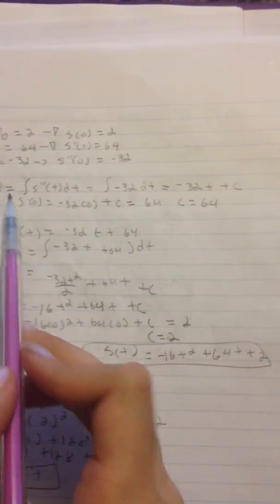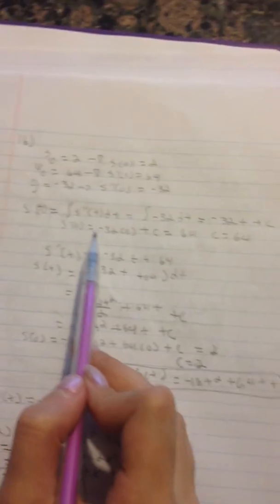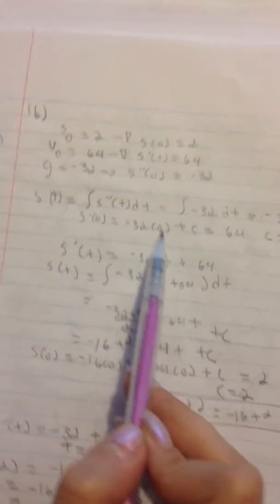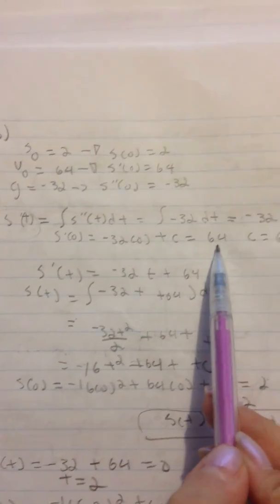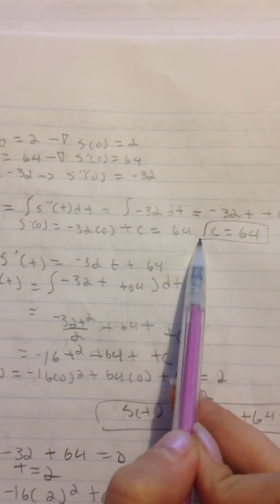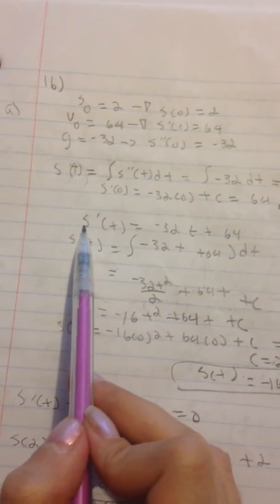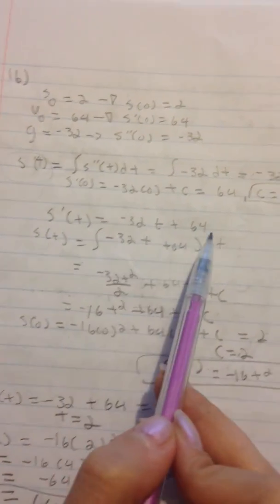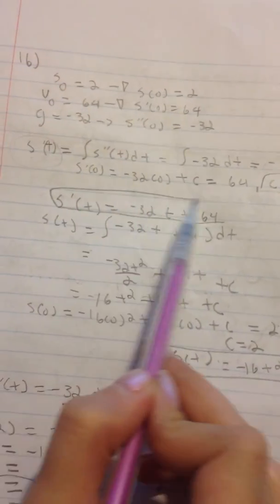Now we need to find C. We have S prime of 0 equals negative 32 times 0 plus C. Setting that equal to 64, we get C equals 64. So S prime of T equals negative 32T plus 64.